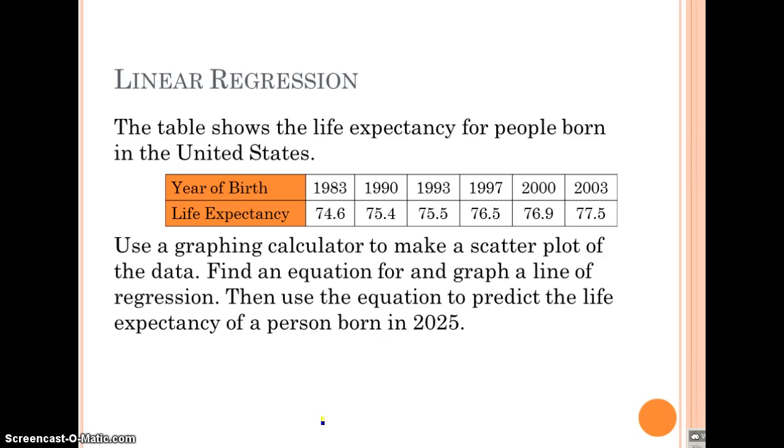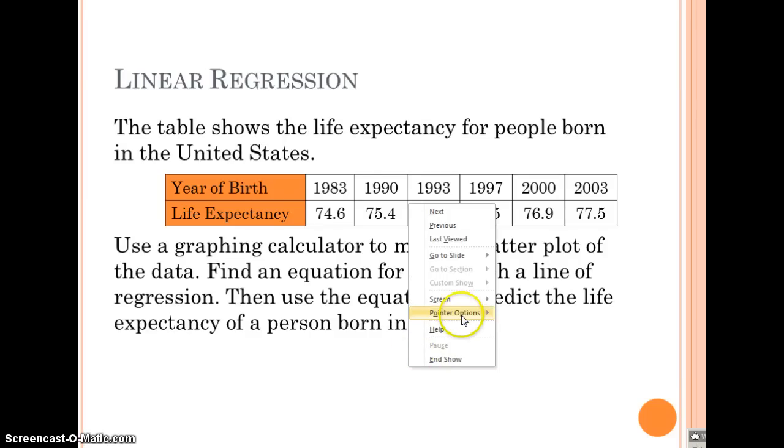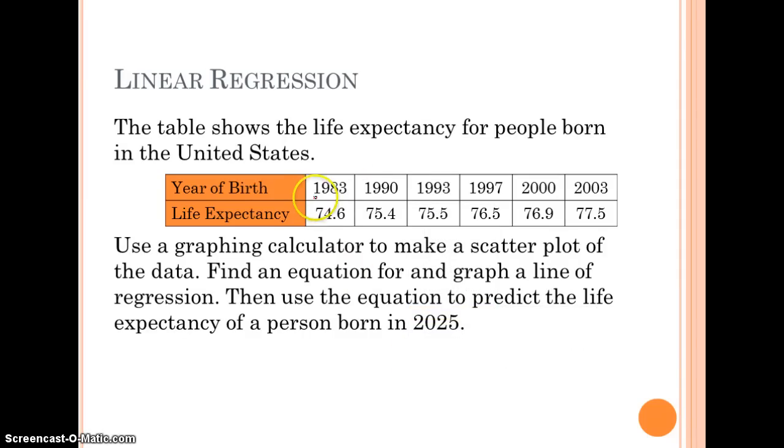Our first example is linear regression. The table shows life expectancy for people born in the United States. Use a graphing calculator to make a scatterplot of the data, find an equation for and graph a line of regression, then use the equation to predict life expectancy of a person born in 2025. Before we type this in, 1983 can be a big number. To make these numbers more manageable, we'll say our 0 year is 1980.